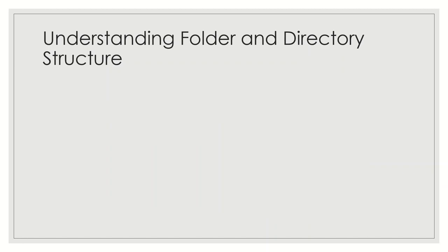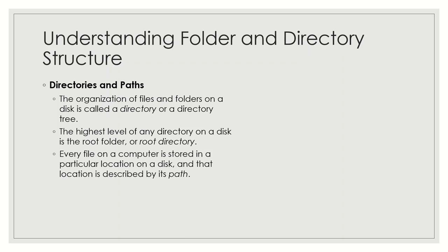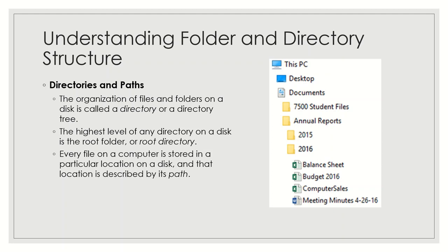The organization of files and folders on a disk is called a directory or a directory tree. The highest level of any directory on a disk is the root folder or root directory. The root directory is always represented by the drive letter and a colon followed by a backslash. For example, the root directory of the hard drive is represented as C colon backslash.